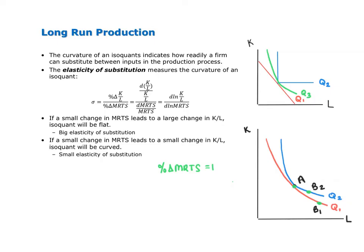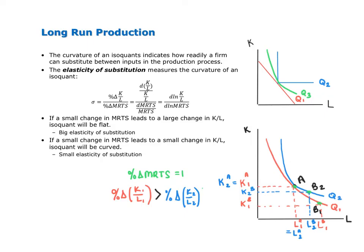In moving from A to B1, there's a 1% change in slope, and in moving from A to B2, there's also a 1% change in slope. Because isoquant Q1 is flatter, we had to move further along to the right to get that 1% change than we had to move along isoquant Q2. For this 1% change in the MRTS, the capital-to-labor ratio changes by a higher percentage from A to B along the red isoquant Q1 than it changes from A to B along isoquant Q2. Because the percentage change in the MRTS is the same but isoquant Q1 has a larger percentage change in the capital-to-labor ratio, the elasticity of substitution is bigger for isoquant Q1.